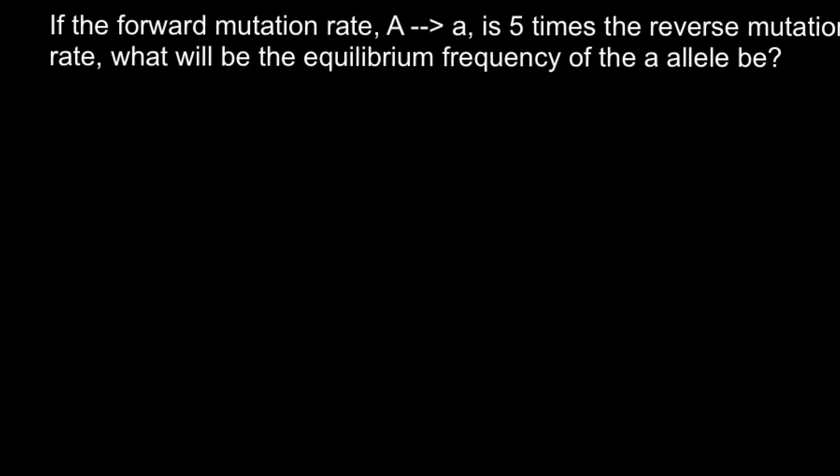So, in order to solve this problem, let's analyze the data that we have here. First of all, let me show you the formula that we are going to use. And here is the formula: Q, that stands for the recessive allele, Q at equilibrium would equal to U, and this is forward mutation rate, divided by U plus V. Once again, U forward mutation rate, and V backward mutation rate.